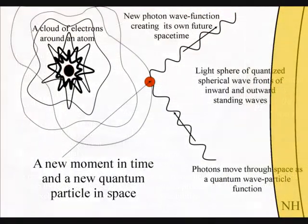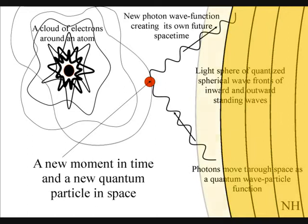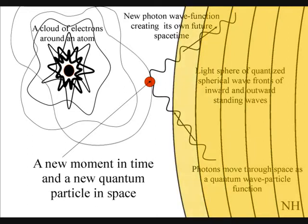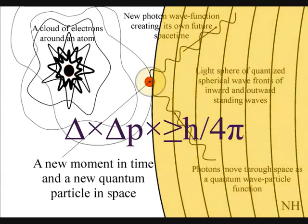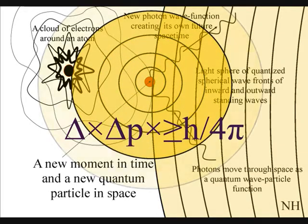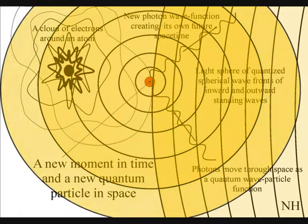There must be a limit to how close we can observe and still have a measure of time. In this theory, that limit is at the quantum level of the atoms. Time is formed by the quantum wave particle function, or probability function of quantum mechanics.